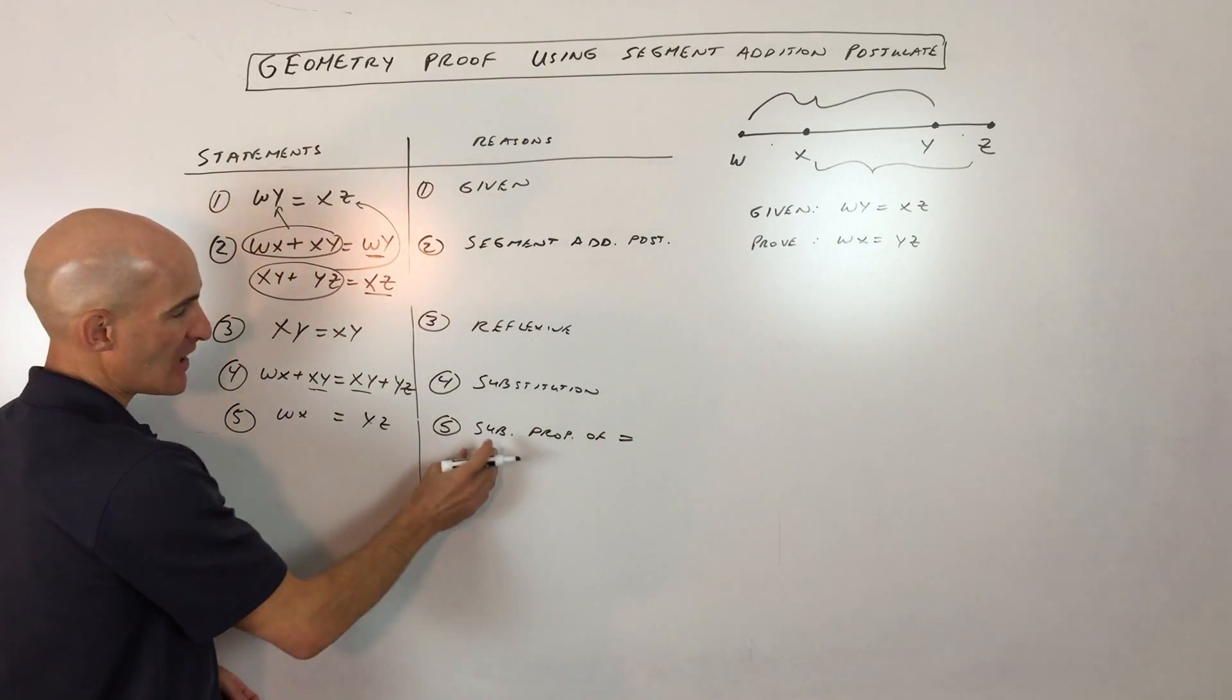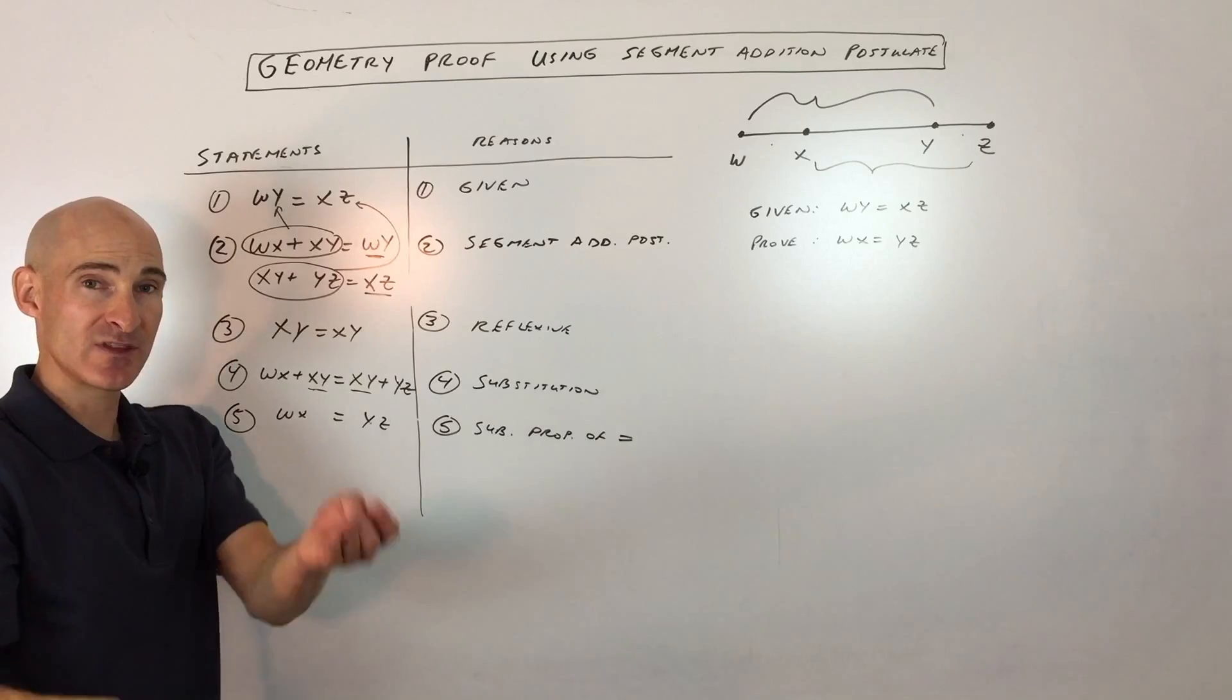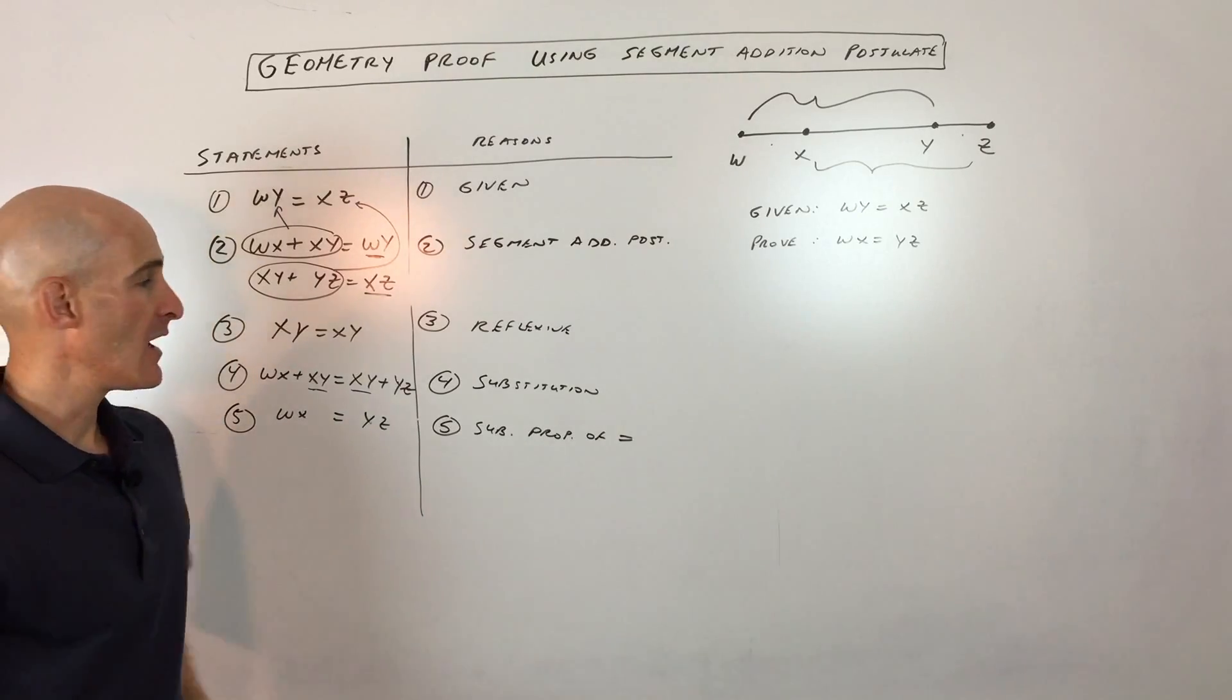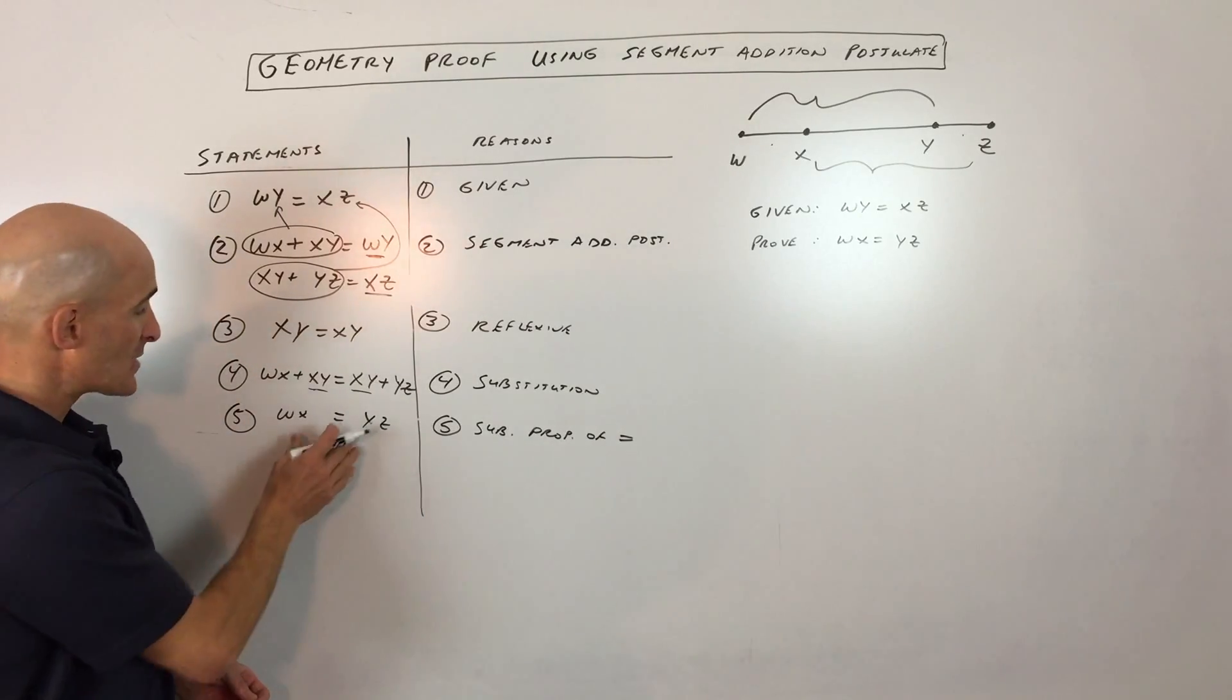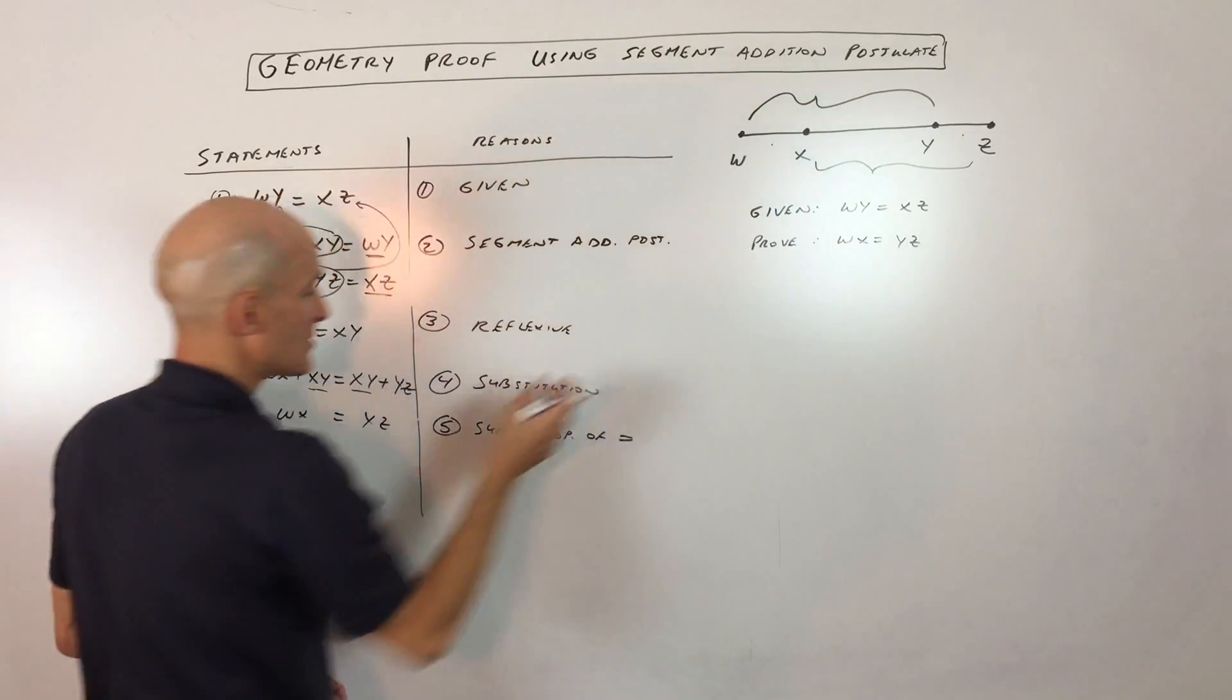I'm just abbreviating. But you can write it out. Subtraction property of equality. If you do the same thing to both sides, subtraction, it's still going to be equal. And that's what we were trying to prove. So that's our last step. So we've completed it.